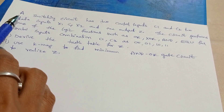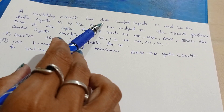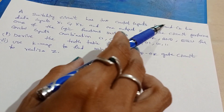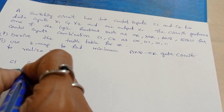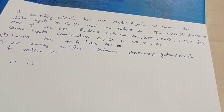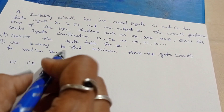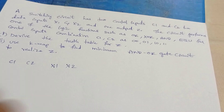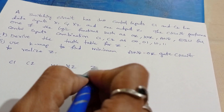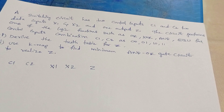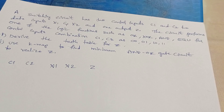The given question involves a switching circuit with two control inputs C1 and C2, two data inputs X1 and X2, and one output Z. The circuit performs one of several logic functions depending on the control inputs.